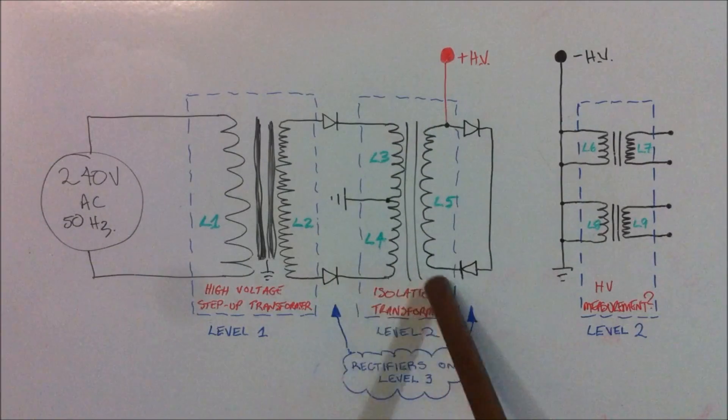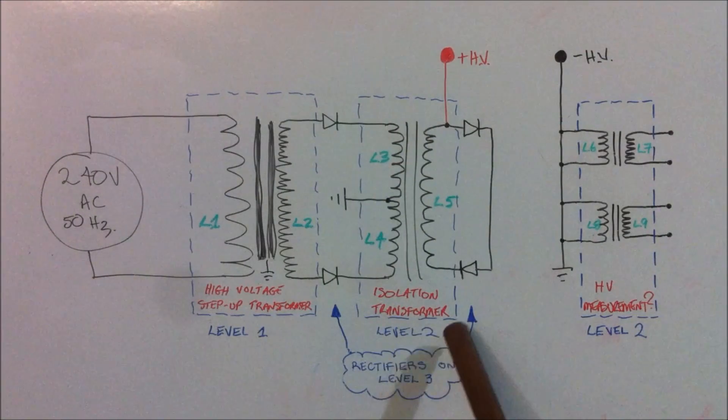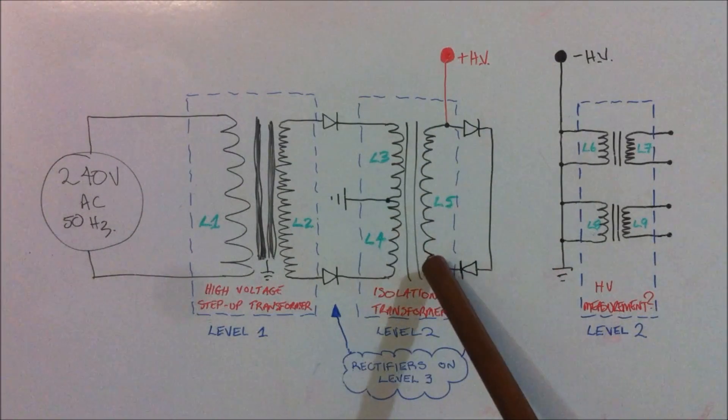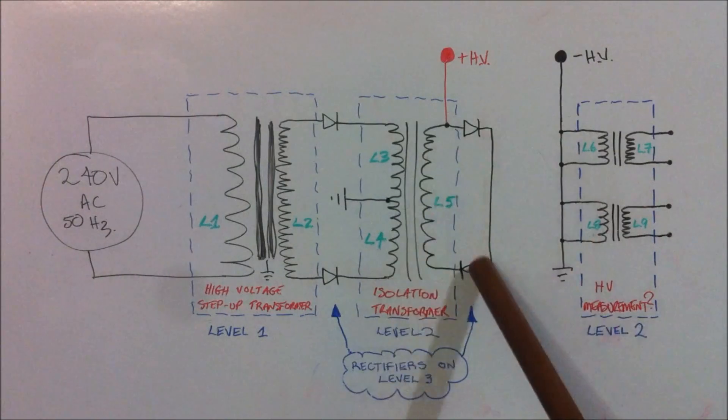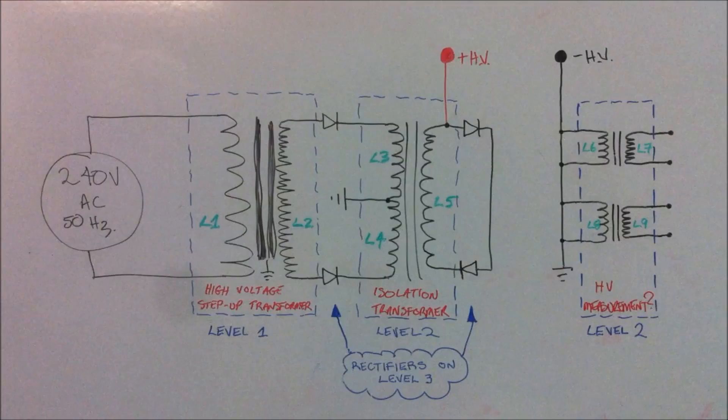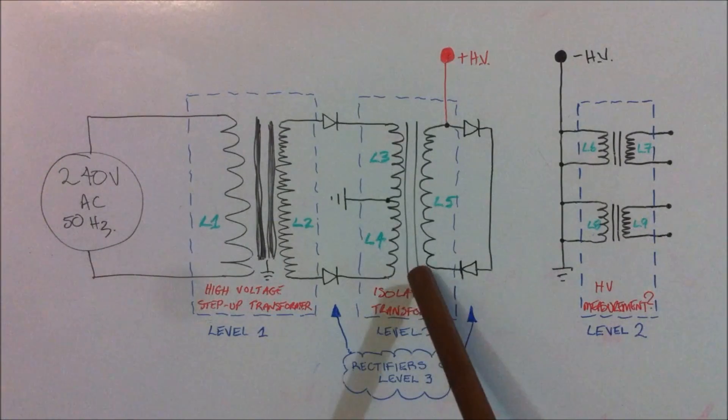which is sitting on the second level of the unit and the L5 pickup coil with the other two diodes from level 3 form the high voltage winding. Now I'm saying this is more of an isolation transformer because of the fact that we're using fairly heavy gauge wire here.